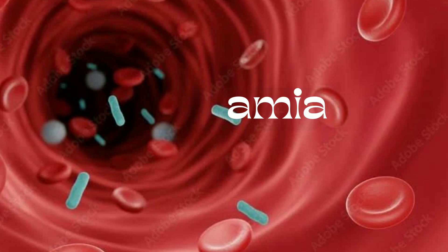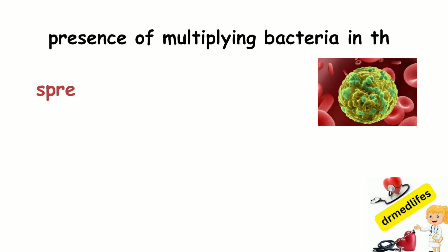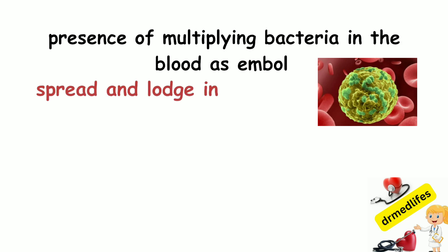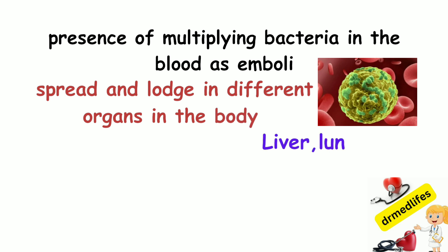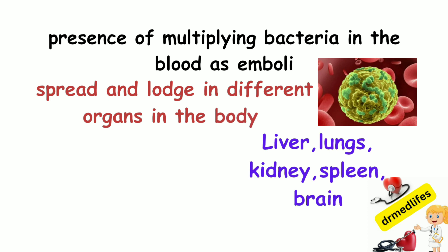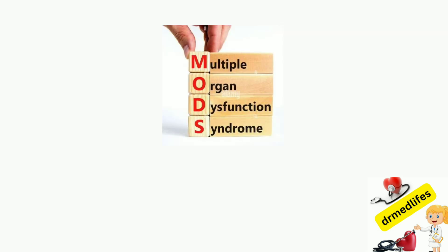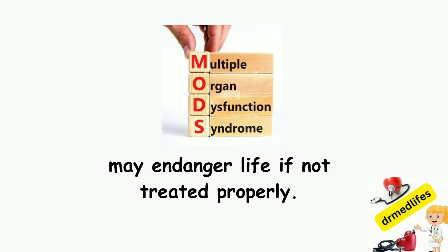Pyemia is the presence of multiplying bacteria in blood as emboli, which spread and lodge in different organs in the body like liver, lungs, kidneys, spleen, and brain, causing pyemic abscess. This may lead to multi-organ dysfunction syndrome. It may endanger life if not treated properly.